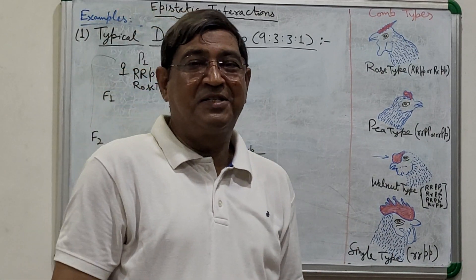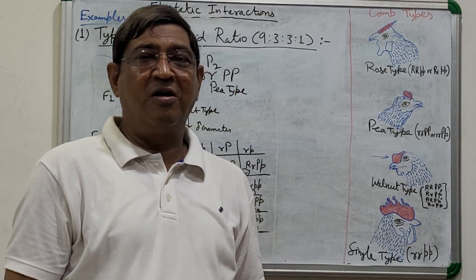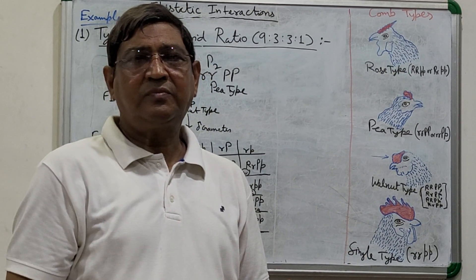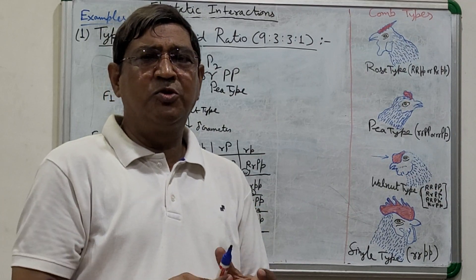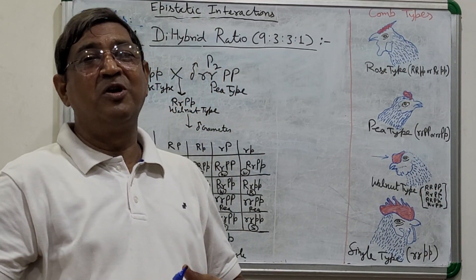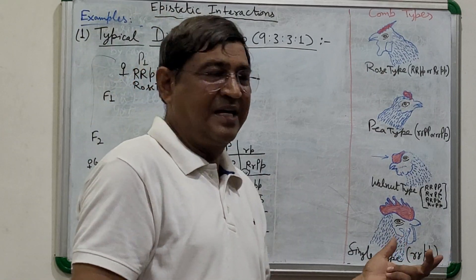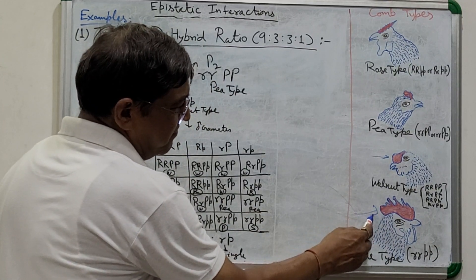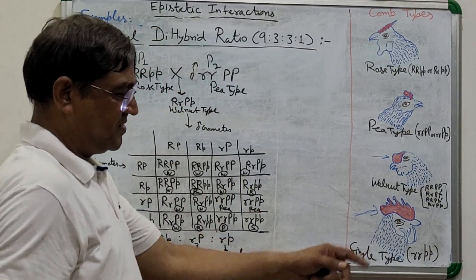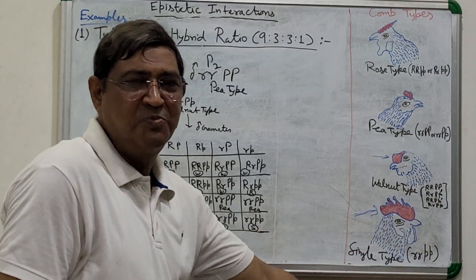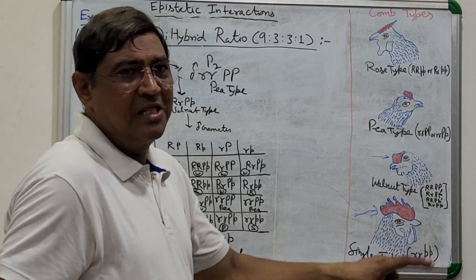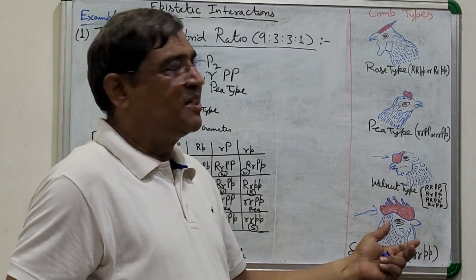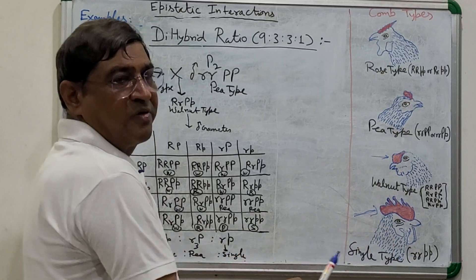The remaining case is when both genes come together in recessive form — small r small r with small p small p. This gives the fourth type, the single-type comb. All poultry having small r small r small p small p will show single-type comb.